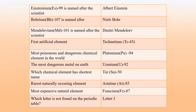The element Einsteinium, whose atomic number is 99, is named after scientist Albert Einstein, famous for the theory of relativity. The element Bohrium, whose atomic number is 107, is named after scientist Niels Bohr, the person behind Bohr's model of atoms. The element Mendelevium, whose atomic number is 101, is named after Dmitri Mendeleev.